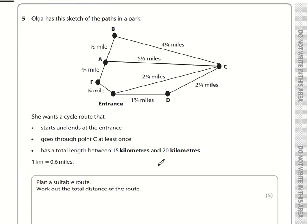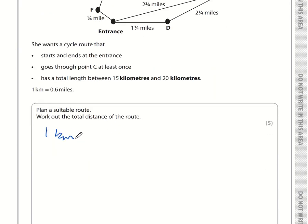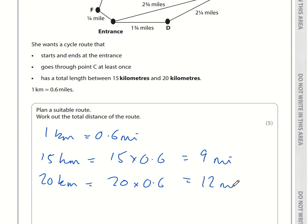Question number 5. The key thing is we want a total length between 15km and 20km, but everything is in miles. What is this in miles? I know 1km is 0.6 miles. So 15km is 15 times 0.6, which is 9 miles. And 20km is 20 times 0.6, which is 12 miles. I'm looking for a route that is between 9 and 12 miles and goes through C at least once.